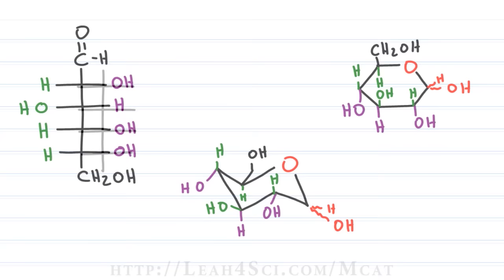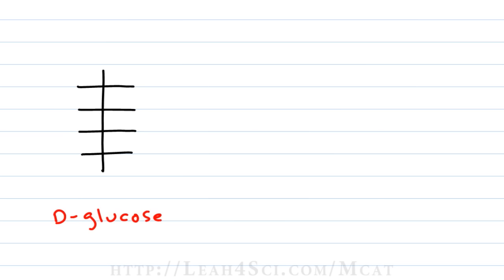Let's start with a Fischer projection for D-glucose. Recognize that D-glucose is a D-aldohexose which means it has an aldehyde at the end, it has six carbons and the ose means it's sugar.